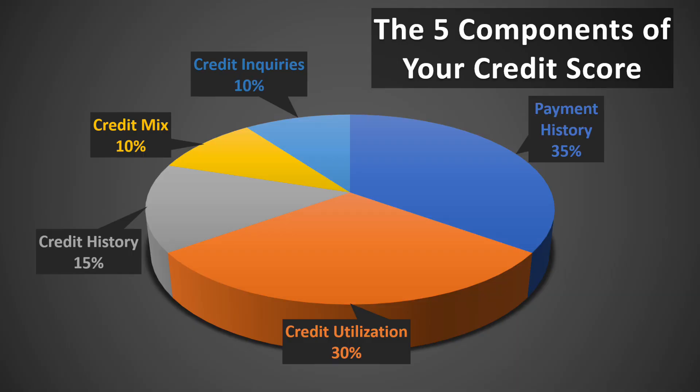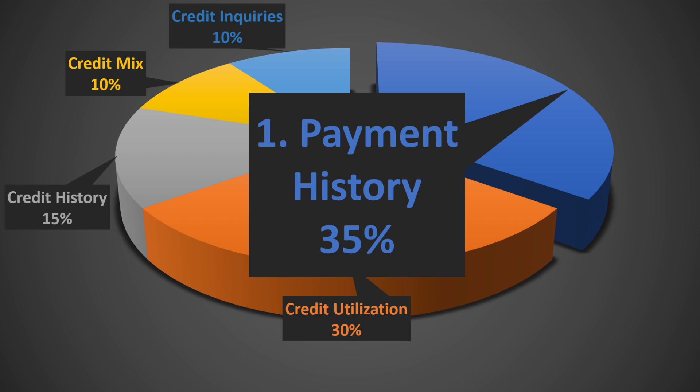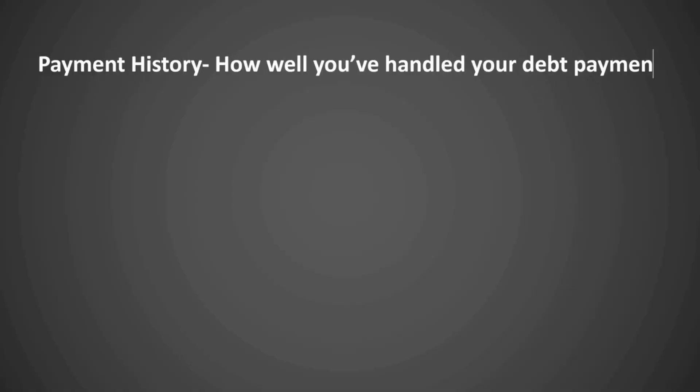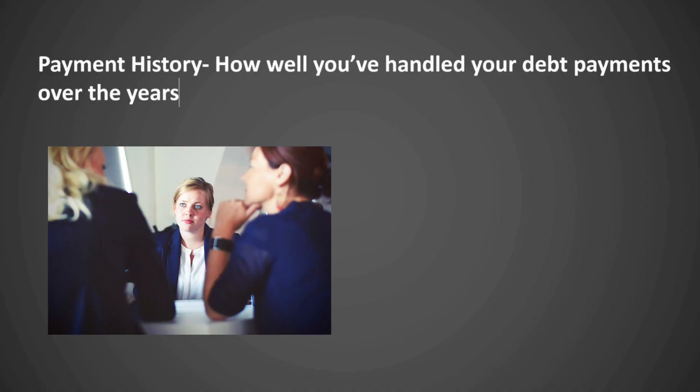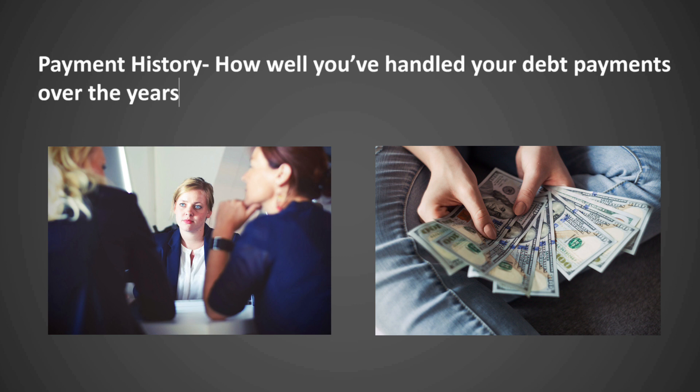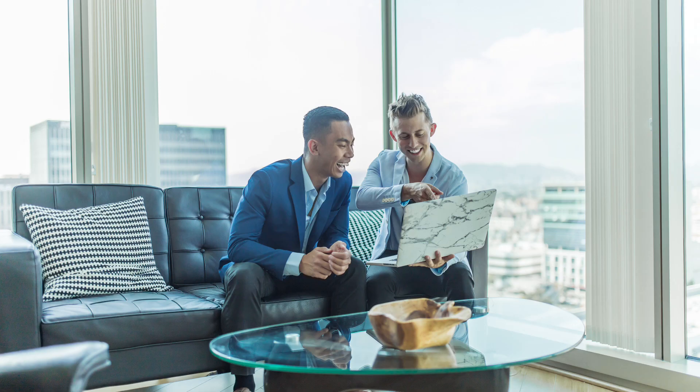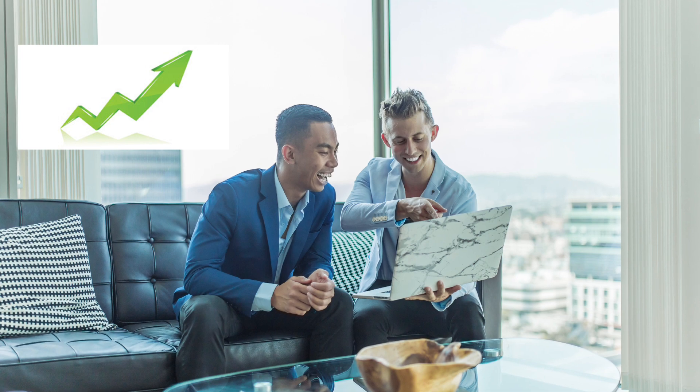The credit score calculation is actually broken down into five parts. Payment history actually makes up 35% of the credit calculation and is the most significant part of the whole thing. This is categorized simply by how well you handled your debt payments over the years. If you have any late payments or allow any of your accounts to go into delinquency, your payment history will be influenced negatively. Therefore, paying your bills on time is generally one of the most important and simplest ways to increase your credit rating over time.